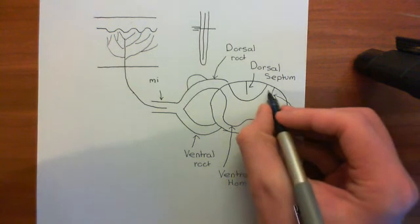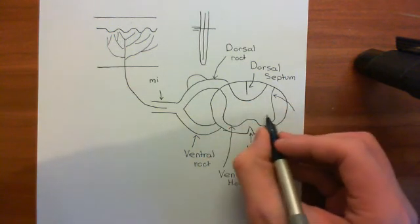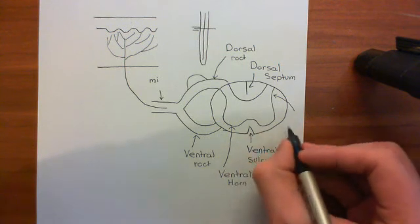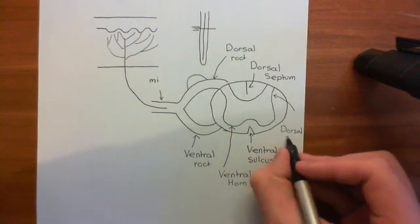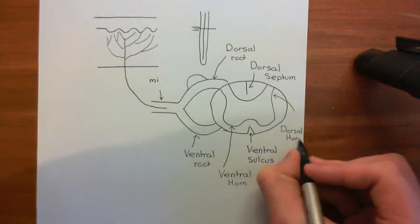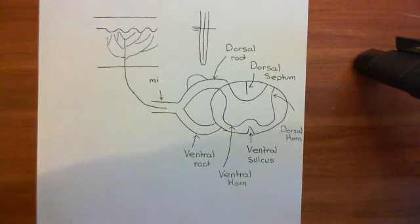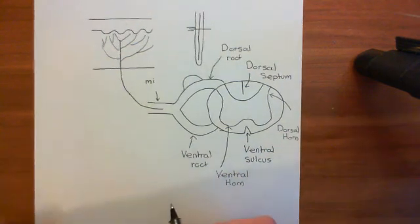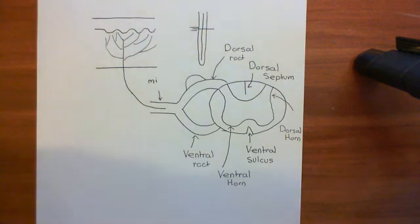Of course, you have a dorsal horn on the left and a dorsal horn on the right and a ventral horn on the left and a ventral horn on the right. So the grey matter can be divided up into these ventral and dorsal horns. And I'm going to have to call it there for this video because my pen has just run out. But we'll continue this discussion in the next video.